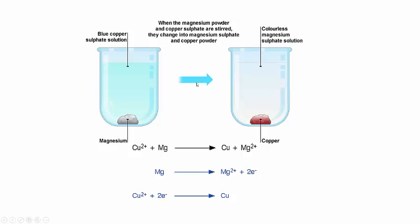What happens here is that there are copper ions in the solution, and these copper ions steal electrons from the magnesium, forming copper metal and magnesium ions.